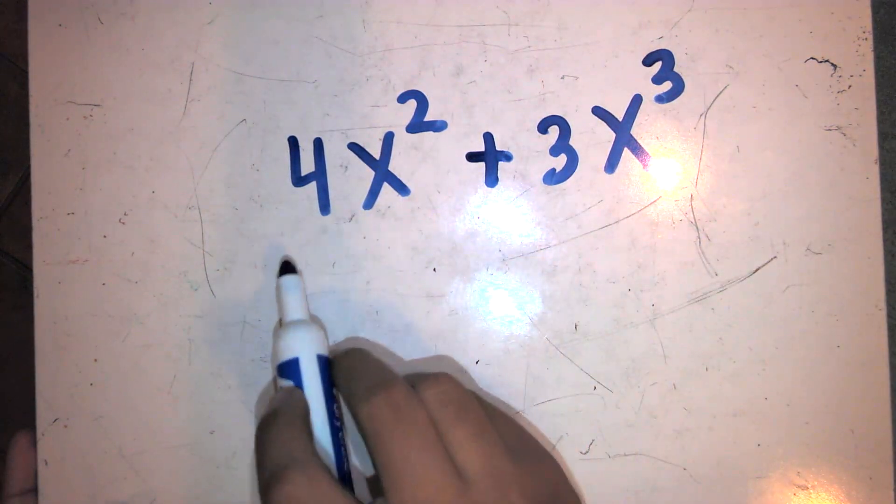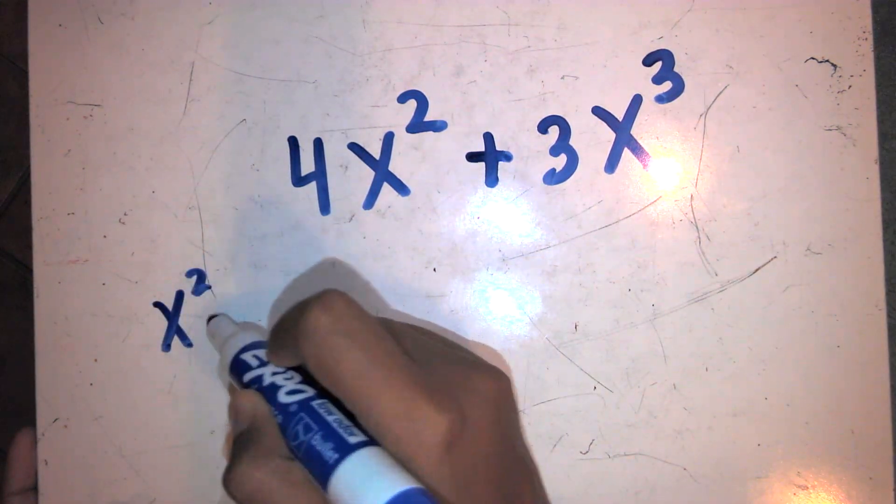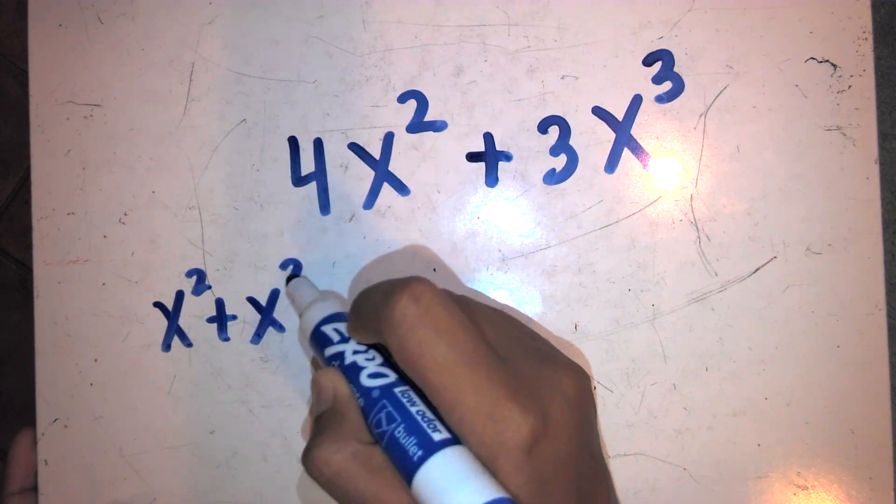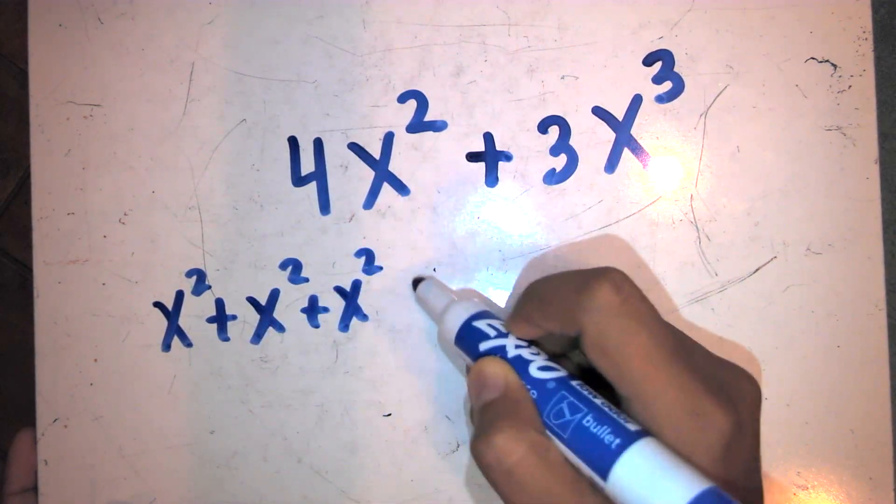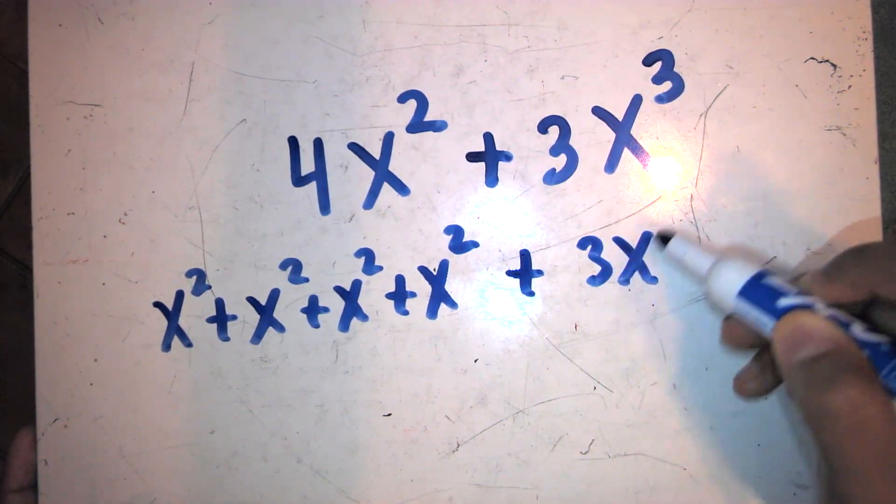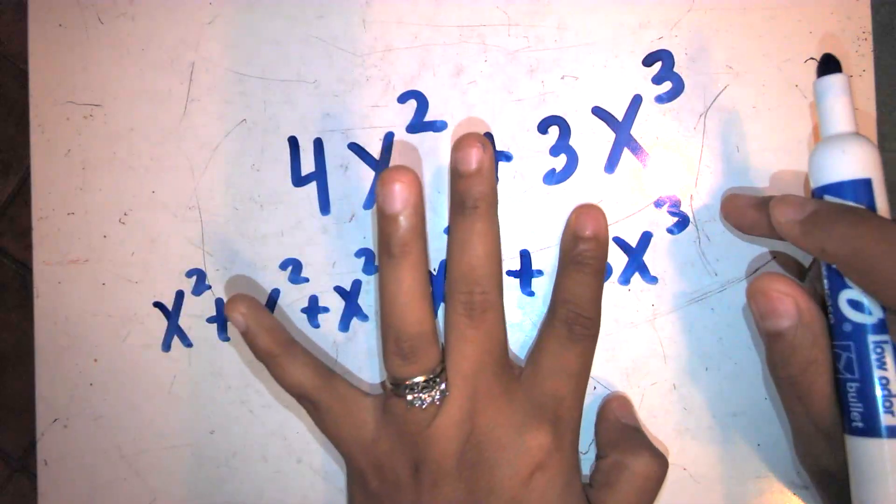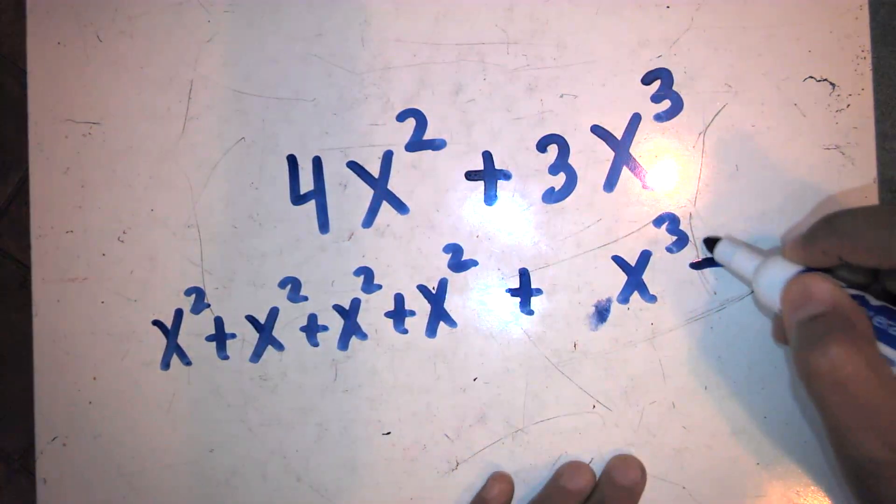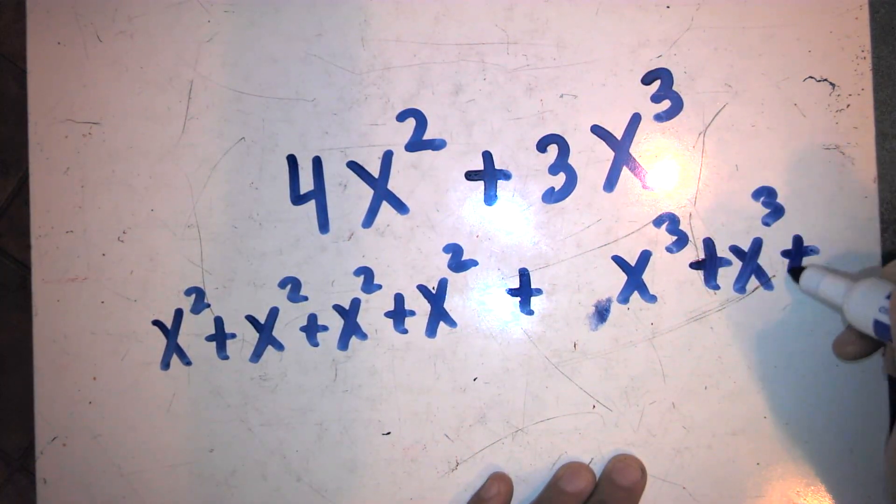So if I could write this, I have, of course, four x squared, or four times x squared is x squared being added to itself four times, plus three x cubes being added to itself three times.